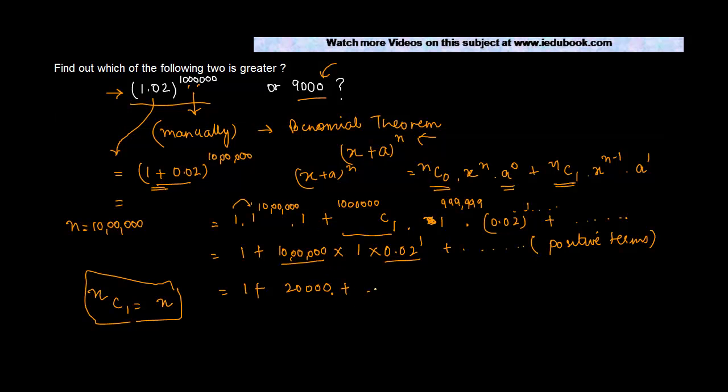Plus whatever number comes in. Now we know 20,000 plus 1 is 20,001 plus whatever value we may get going forward, and this number is obviously greater than 9,000. Hence we say that 1.02 raised to the power of a million is greater than 9,000.